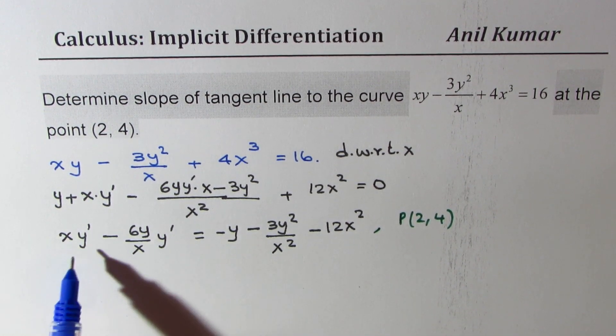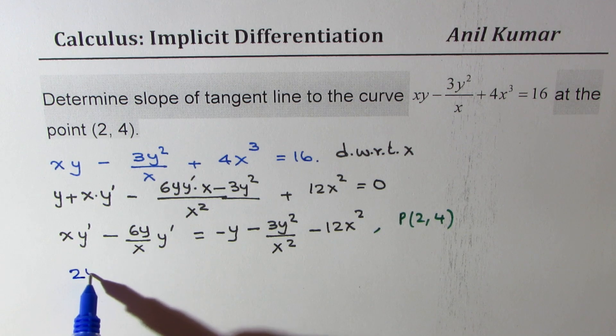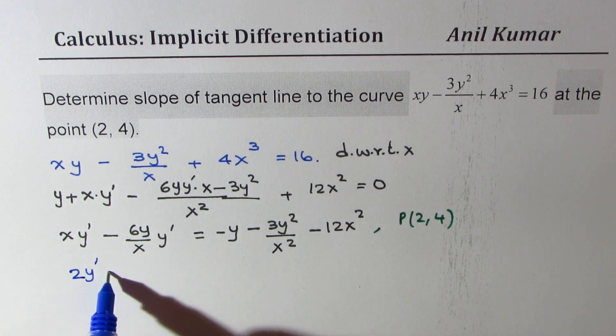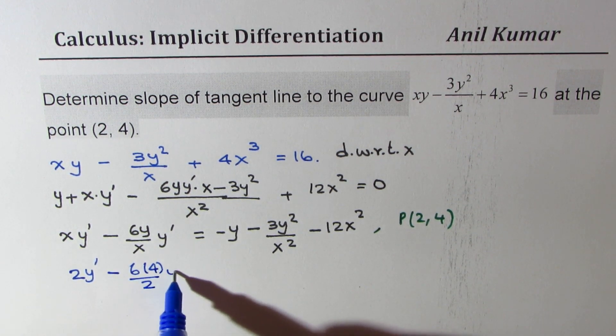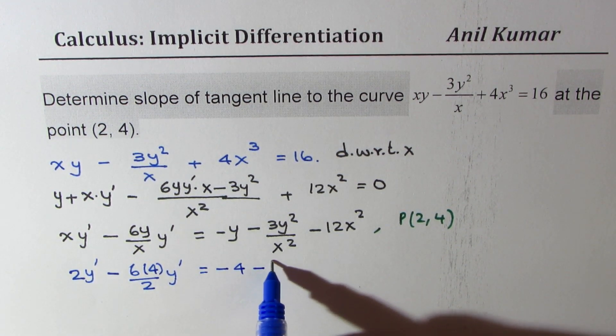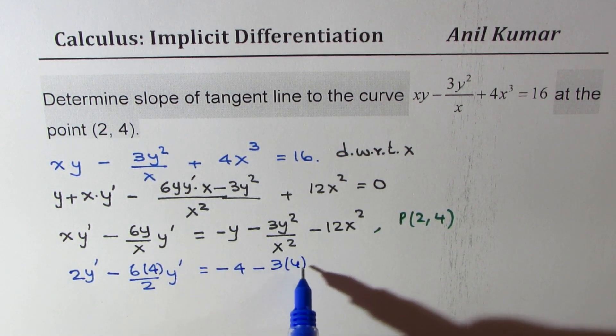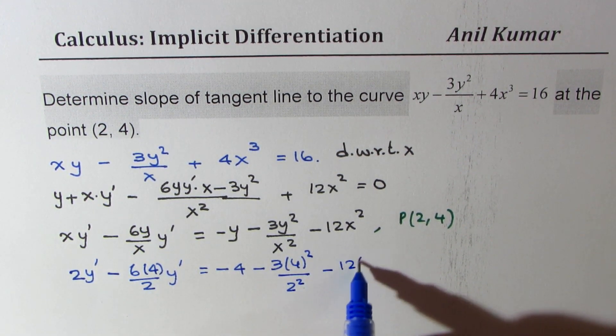We could take common, so x is 2, so we get 2 y dash minus 6 times 4 over 2 y dash equals minus 4 minus 3 times 4 square over 2 square minus 12 times 2 square.